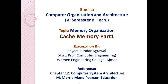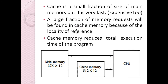Today we will continue with our discussion on memory organization. In this video I will discuss the introduction of cache memory. Cache is a small memory in comparison to main memory, but it is very fast. It is designed so that CPU access to cache memory is faster than main memory. Because cache is fast, it is obviously expensive, and therefore we keep only a small cache in comparison to main memory.